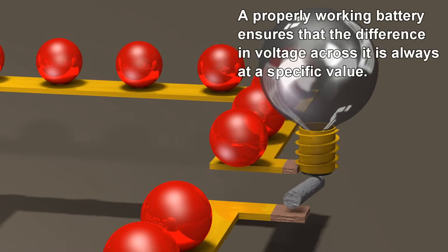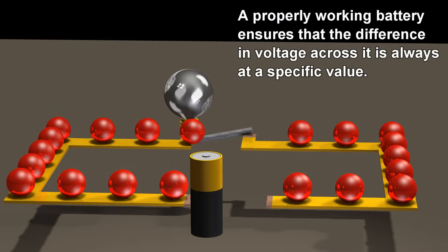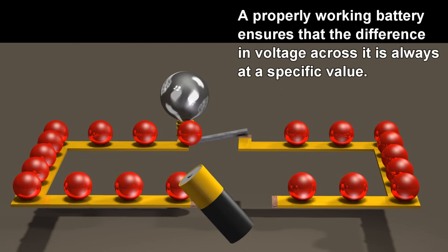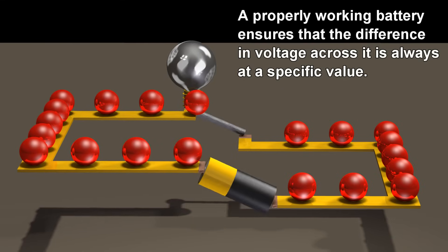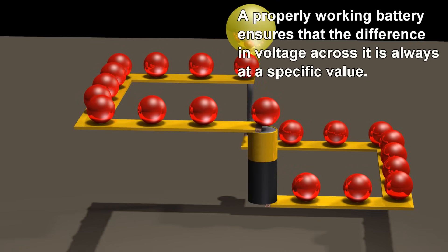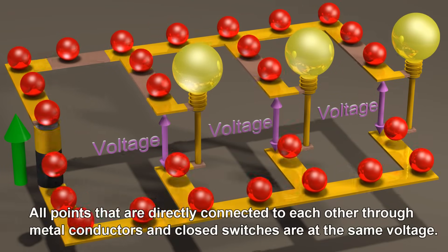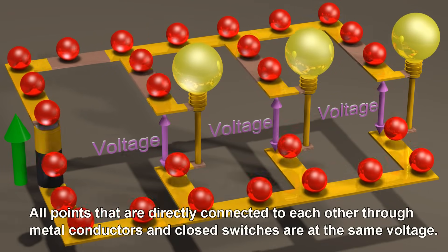A properly working battery ensures that the difference in voltage across it is always at a specific value. All points that are directly connected to each other through metal conductors and closed switches are at the same voltage.